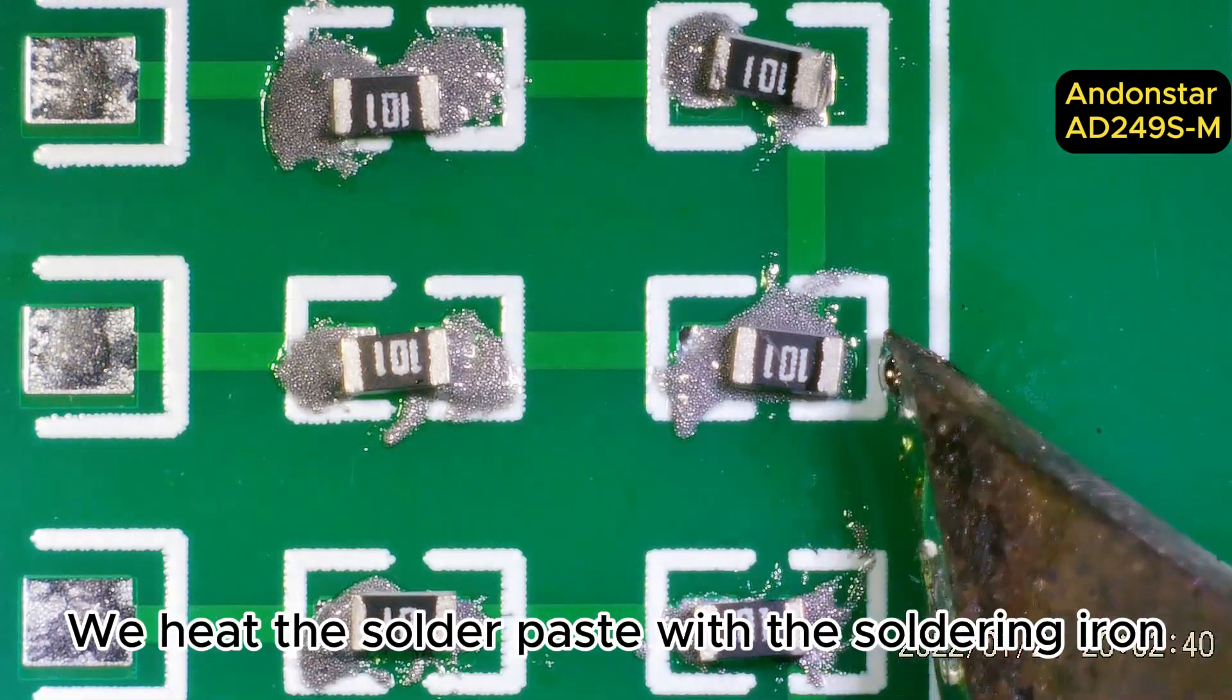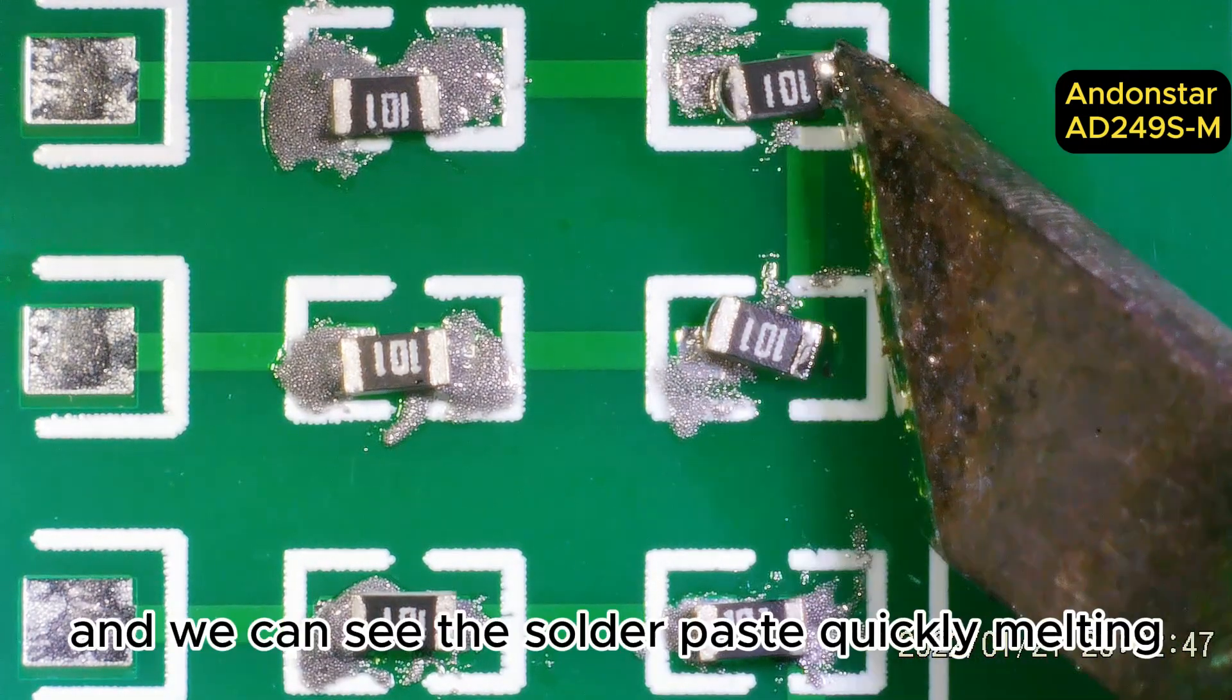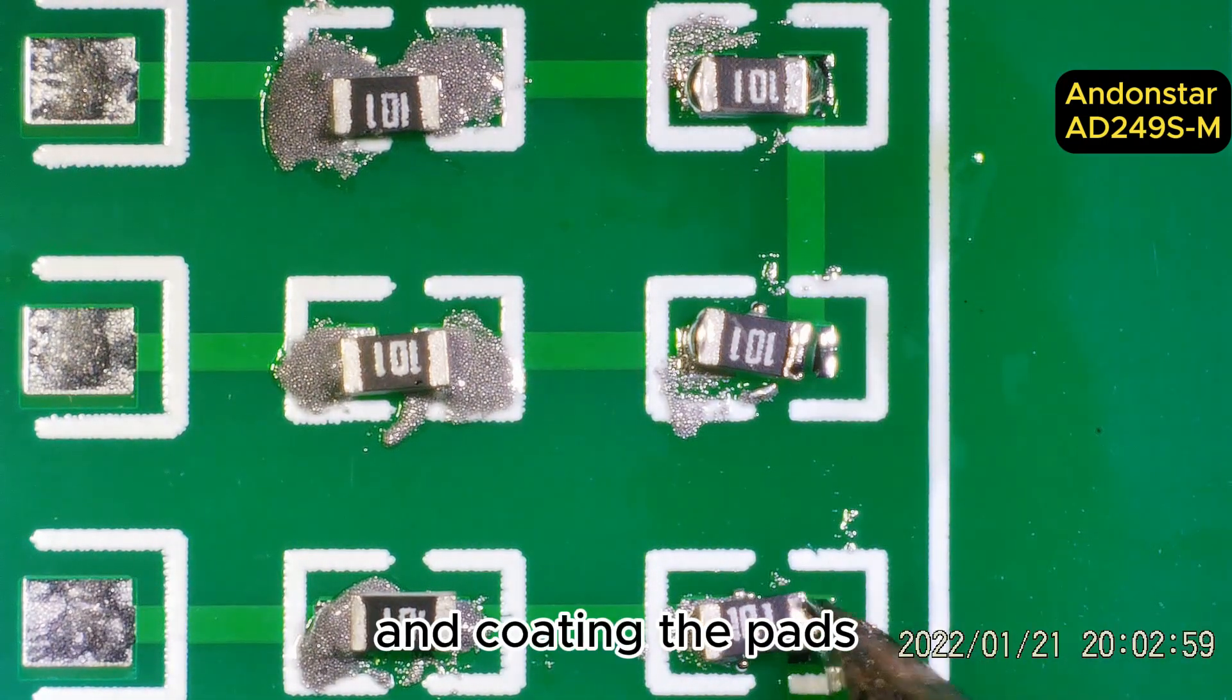We heat the solder paste with the soldering iron, and we can see the solder paste quickly melting and coating the pads.